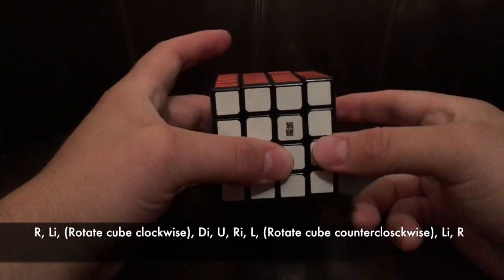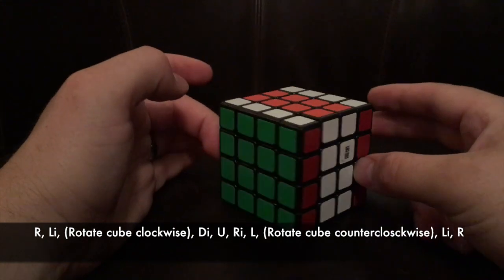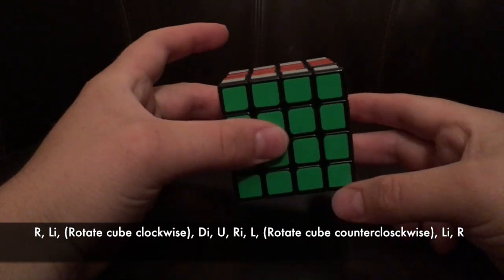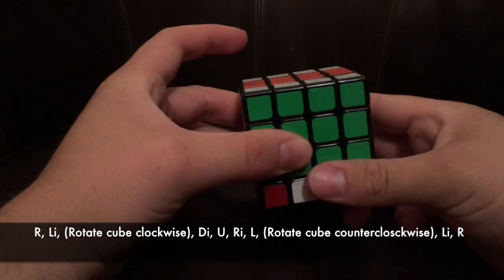Basically go right, L inverse, then you rotate the cube clockwise. You go D inverse,